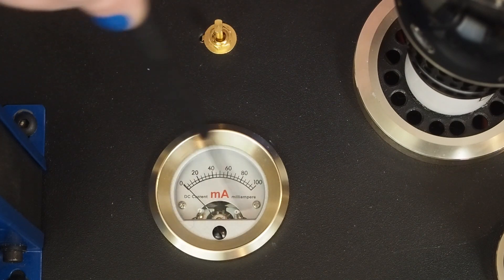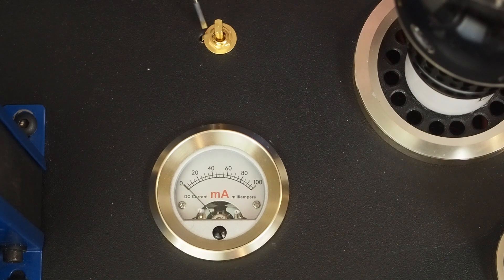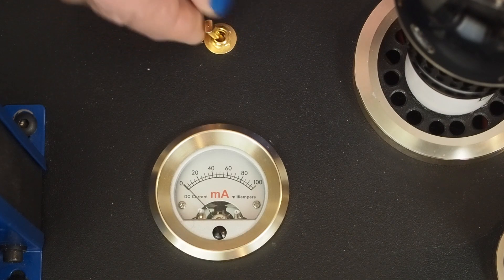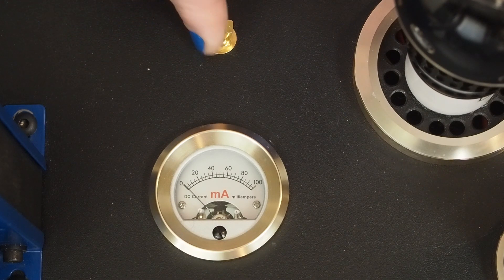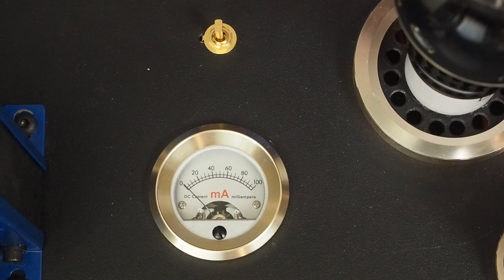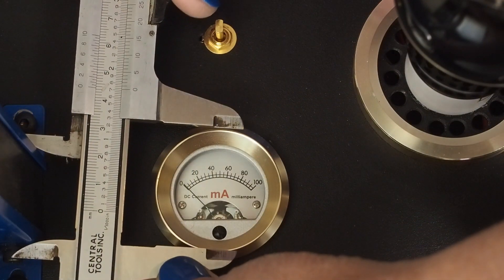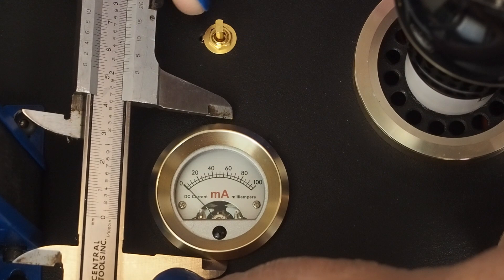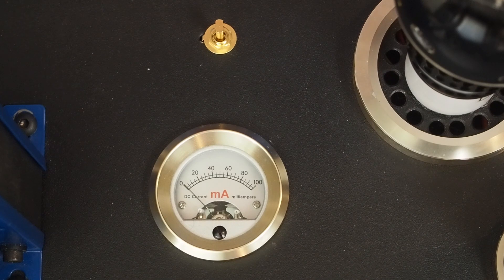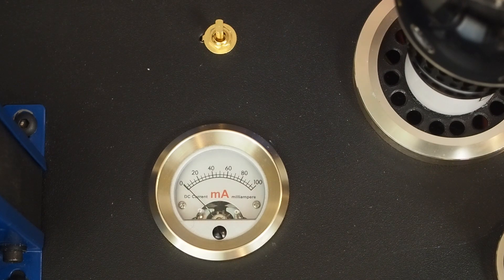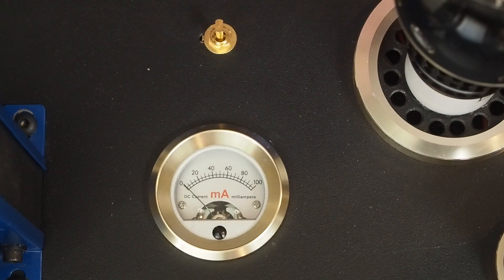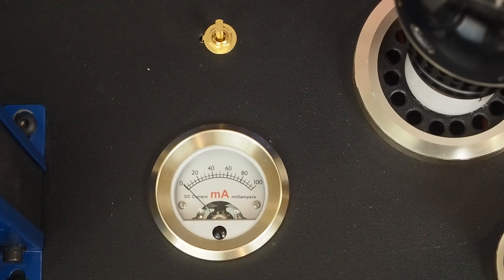Here's the meter and this DPDT switch, which is center off, allows me to switch from one tube to the other tube. So you only need one meter to measure both tubes. Let me show you the size - the total bezel is 50 millimeters, so it's a nice size, not too big but also not super tiny. I think this analog style fits a tube amp much better than a little digital one.